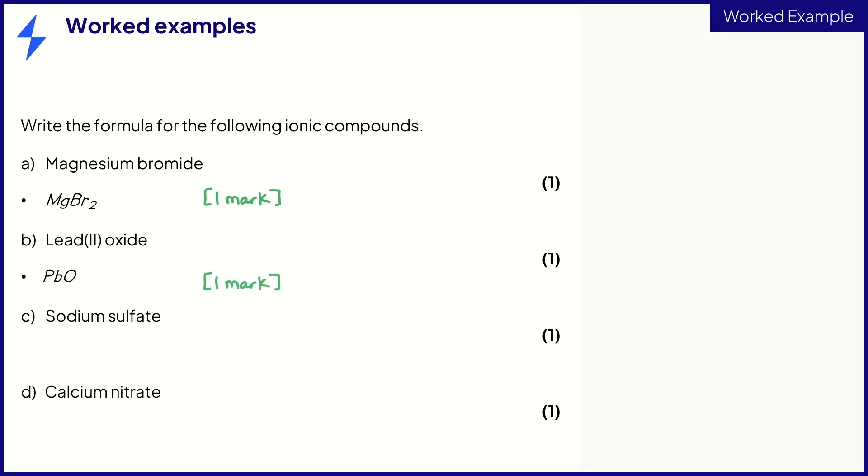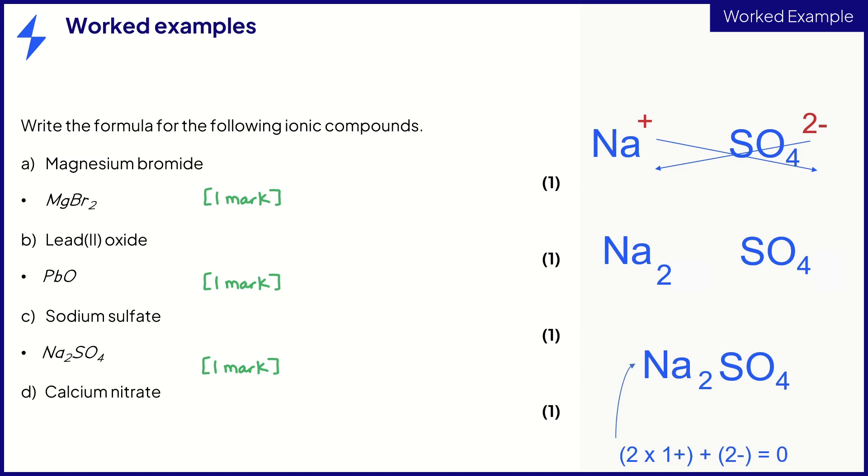You can apply the same method for sodium sulfate but here just be careful as the sulfate ion contains more than one atom. Treat the sulfate ion as a whole and don't be tempted to alter it. Write the ions and charges down. Swap and drop again. Then remove the plus and minus symbols. As you can see the formula is now Na2SO4. Two sodium ions with a charge of 1 plus are required to cancel out the charge of the sulfate ion.